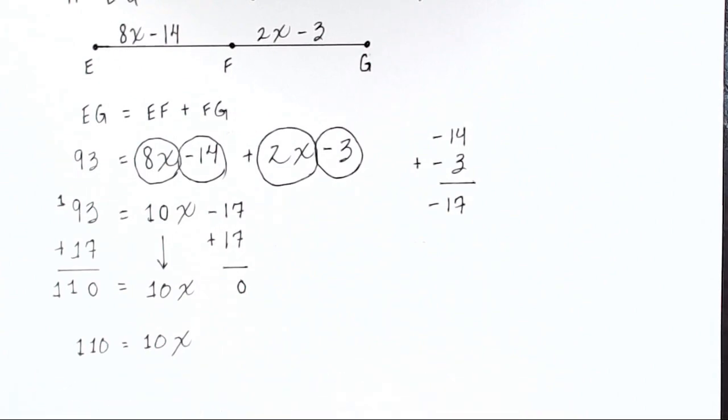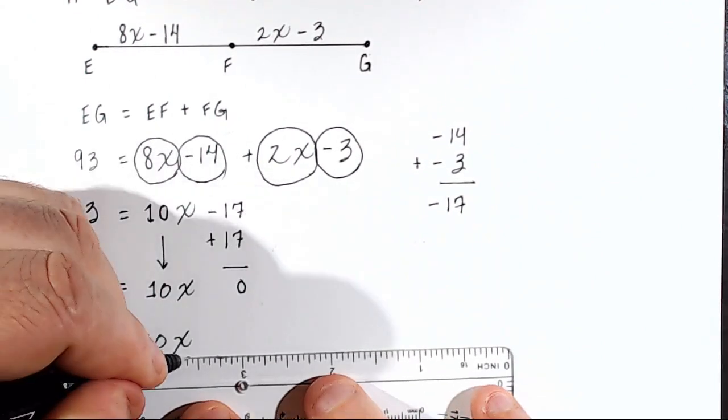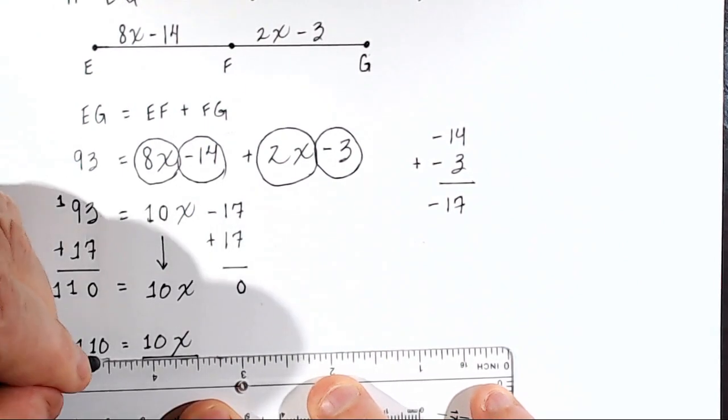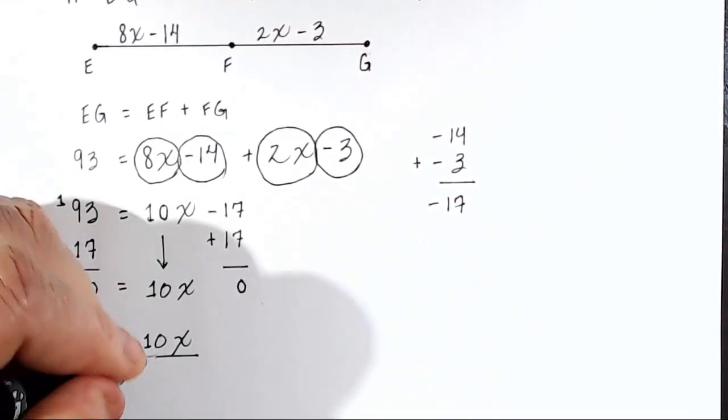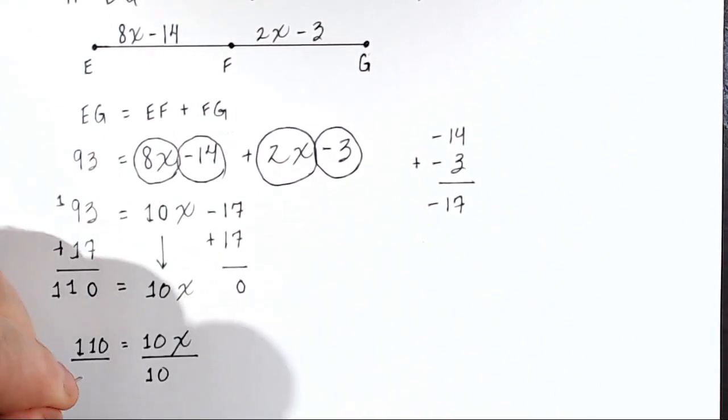We're almost done. One last step. So on the right side of the equation, we have the coefficient 10 multiplied by the variable X. So if I've got 10 times X on the right, what do I do to get rid of the 10? Well, I've got to do the opposite of whatever is currently being done. Currently, 10 is being multiplied by X. So to get rid of it, I have to divide both sides by 10.